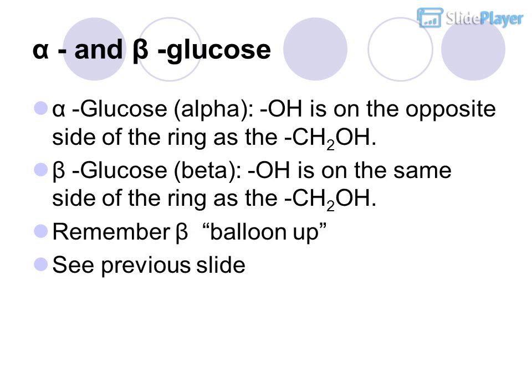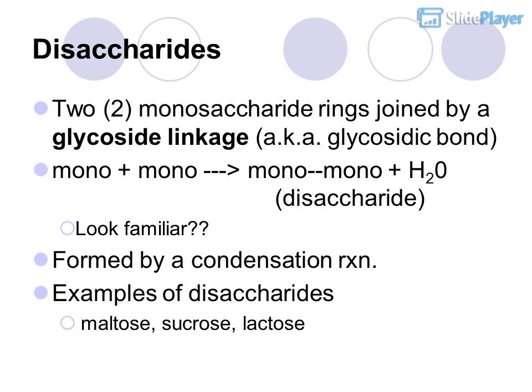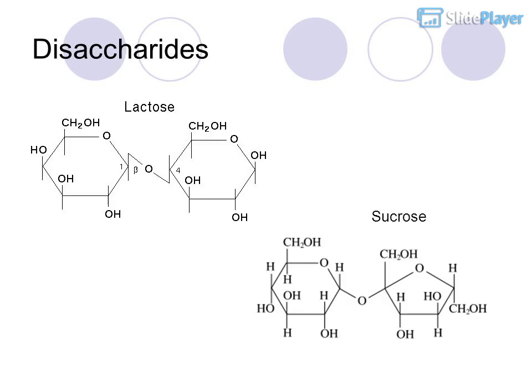Disaccharides consist of two monosaccharide rings joined by a glycosidic linkage. Monosaccharide + monosaccharide → disaccharide + H2O. They are formed by a condensation reaction. Examples of disaccharides include maltose, sucrose, and lactose.